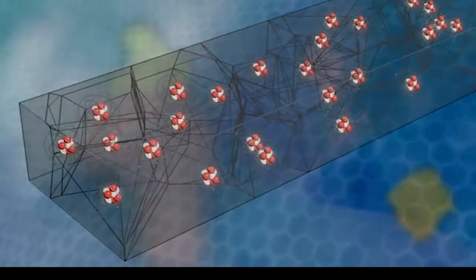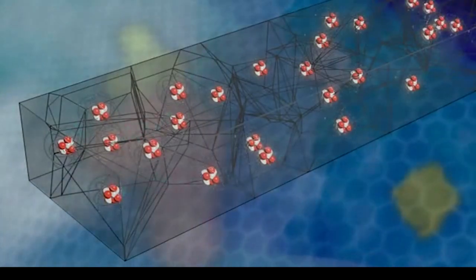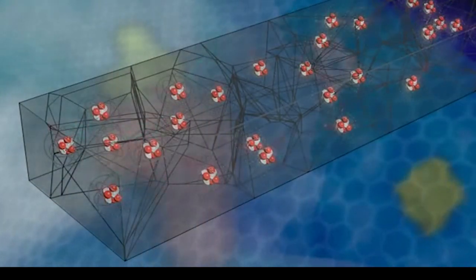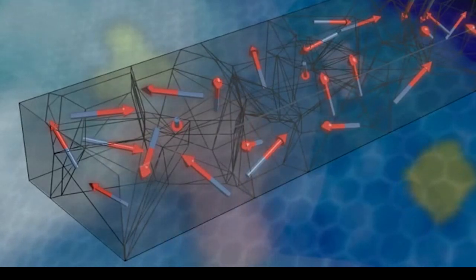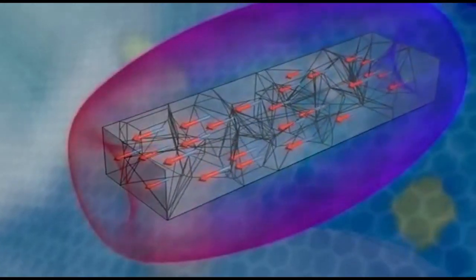Now, most of the time, this doesn't add up to anything, because the individual little magnetic fields that the electrons are making don't add up to anything. But what would happen if they somehow got aligned?